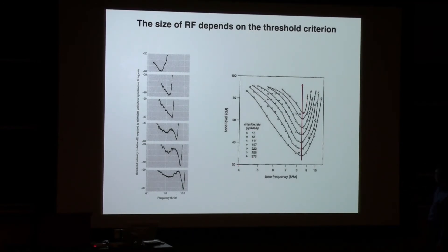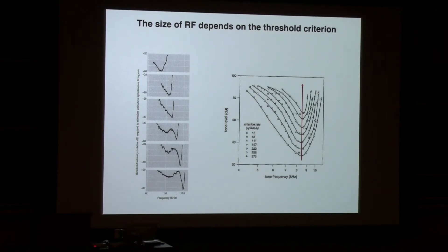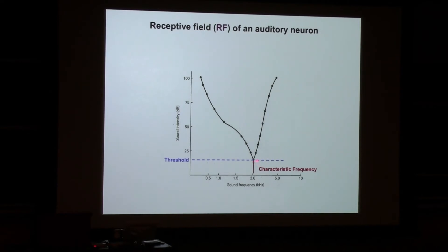As you keep increasing your threshold criterion, the size of the receptive field becomes smaller and smaller. This links back to signal detection and the psychometric functions we just studied. This receptive field of a neuron can also be generalized as your hearing threshold — what you can hear overall is essentially shaped like this tuning curve. Suppose I want to derive an experiment to measure your hearing threshold at two kilohertz — how would you do it?